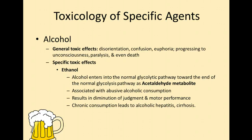The first toxic agent is alcohol. The general toxic effects are disorientation, confusion, euphoria, progressing to eventual unconsciousness, paralysis, or even death. Alcohol enters the normal glycolytic pathway, and at the end of that pathway, we find an acetaldehyde metabolite. That's essentially what we're testing for — that acetaldehyde metabolite — and we find it associated with abusive alcohol consumption or alcoholics.